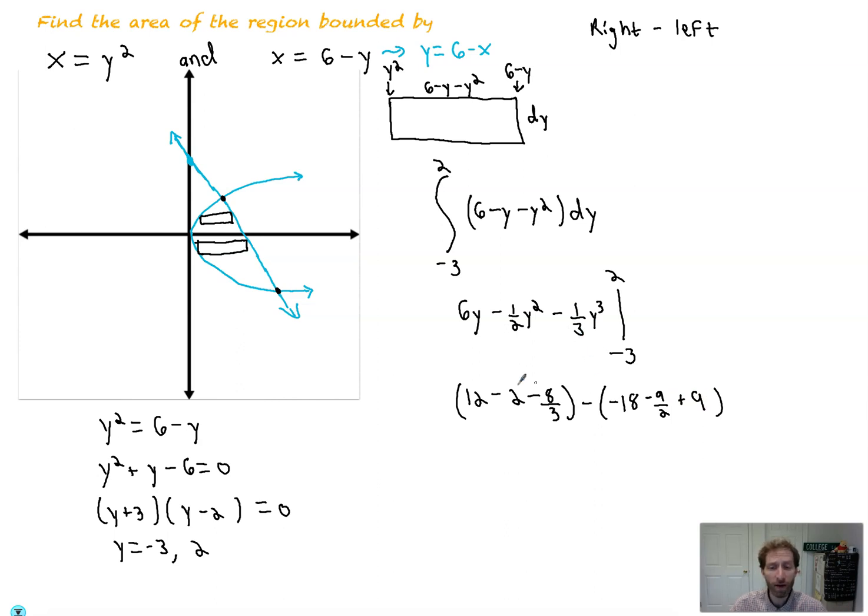And now all we're going to do is just simplify everything down. So I like to join up the like terms. 12 minus 2 is 10, minus 8 thirds. Minus 18 plus 9 is negative 9. With that negative on the outside is positive 9. Minus a minus 9 halves is going to be plus 9 halves.